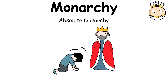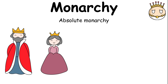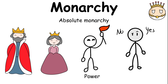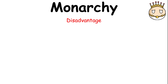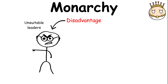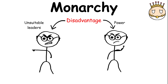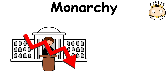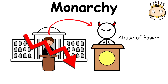On the other hand, an absolute monarchy is where the king or queen has the power to make all the important decisions in a country. The disadvantage of a monarchy is that it can lead to unsuitable leaders who came to power because they were the heirs, often leading to a lack of democratic governance and the potential for abuse of power.